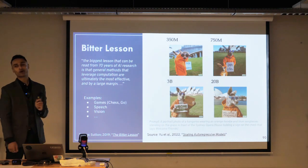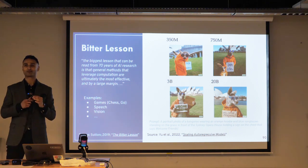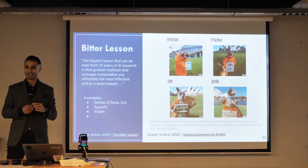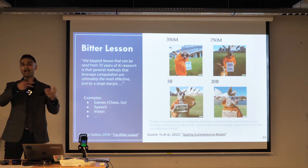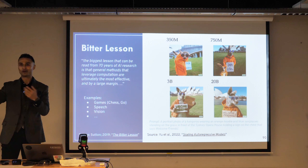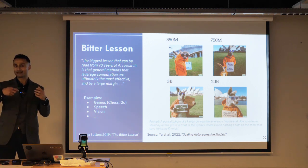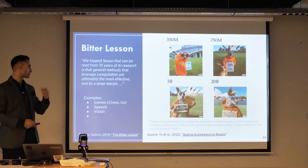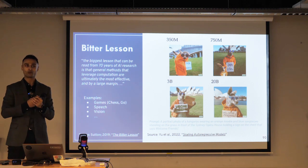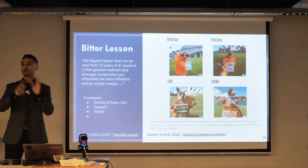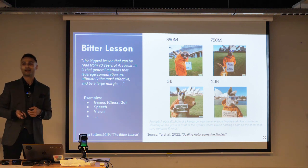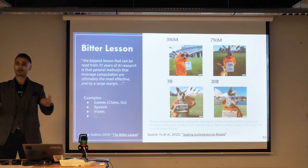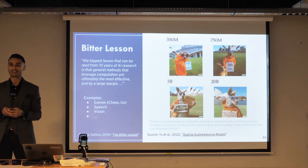The first thing we need to talk about is the bitter lesson — a lesson that people in AI learned over roughly 70 years. The lesson is that general purpose methods that leverage computation tend to always outperform systems that leverage human expertise. Early on, we saw things like expert systems or hand-designed, feature-engineered solutions for vision systems, speech systems, and games like chess and Go. Those always ended up losing to systems that used general purpose search and learning techniques. This lesson is bitter because if you just leverage more and more computation, more parameters, more data, you will outperform human ingenuity.